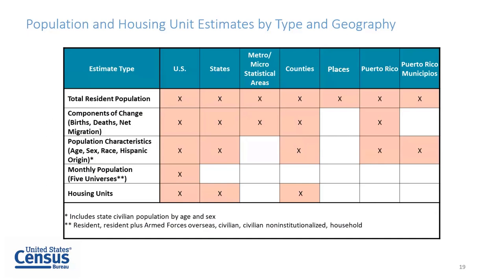Monthly estimates for the five estimates universes are disseminated for the U.S. only. Housing unit estimates are disseminated for the United States, states, and counties.